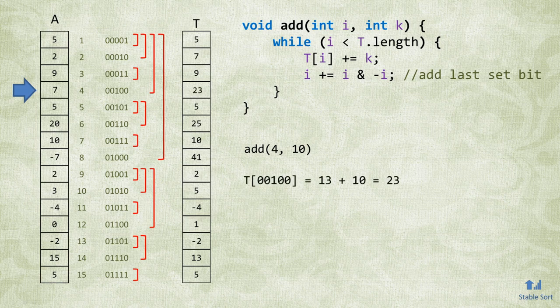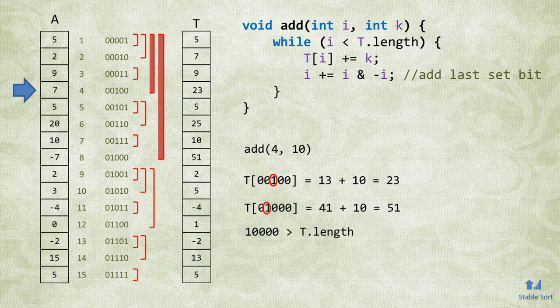In this example, after updating the Fenwick tree at index 4, adding the least significant set bit results in 8. On the following iteration of the loop, adding the least significant set bit results in 16, which is longer than the length of our array, so the function halts.